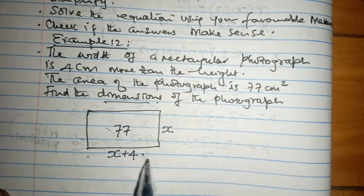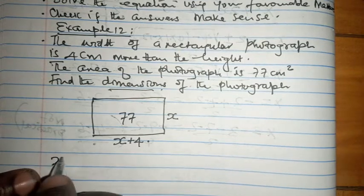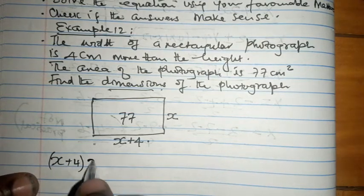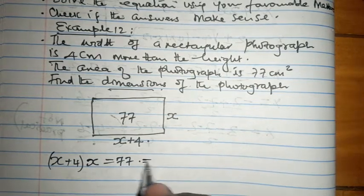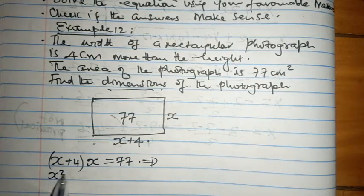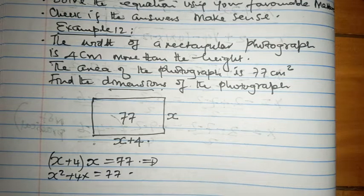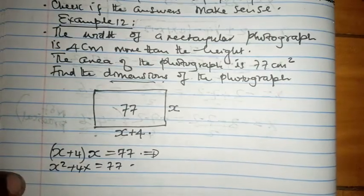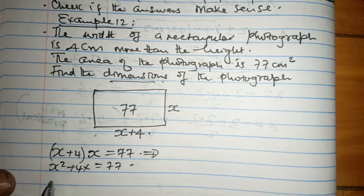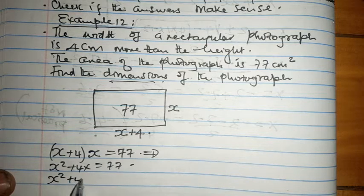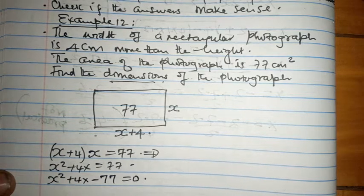The area is 77. And we all know how we get the area of a rectangle, it's length times width. Therefore, we form an equation that looks like x plus four multiplied by x equals 77. Opening this bracket, we have x squared plus 4x equals 77. And we solve quadratic equations when it equals zero. So we bring 77 across. x squared plus 4x minus 77 equals zero.